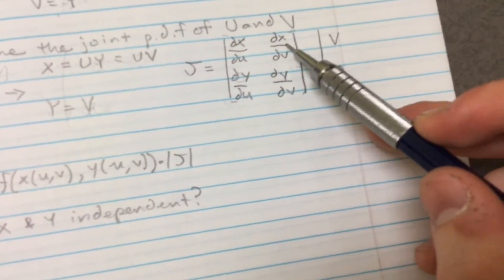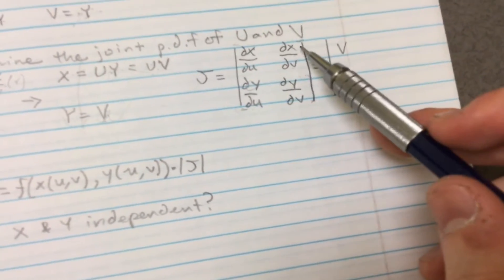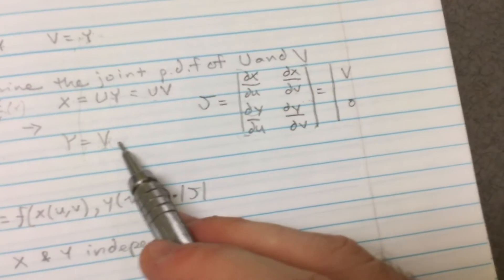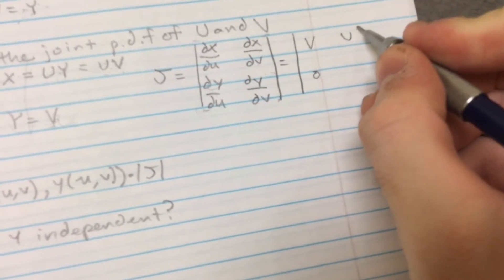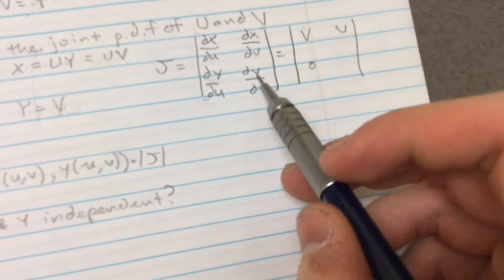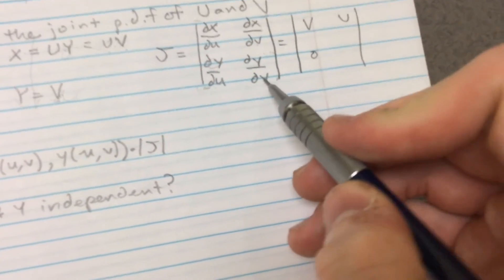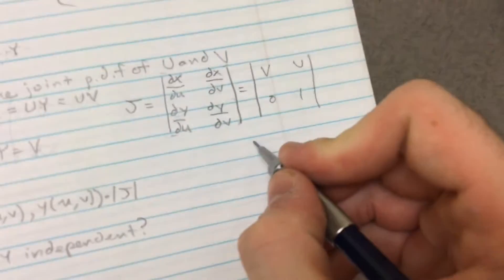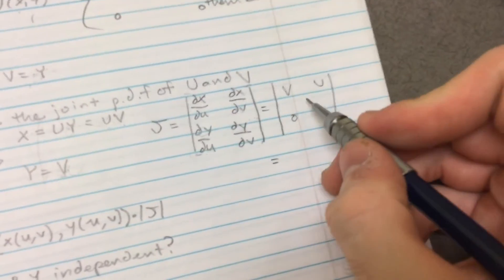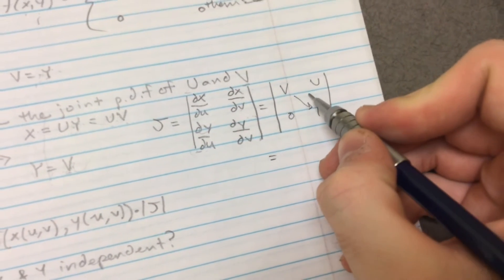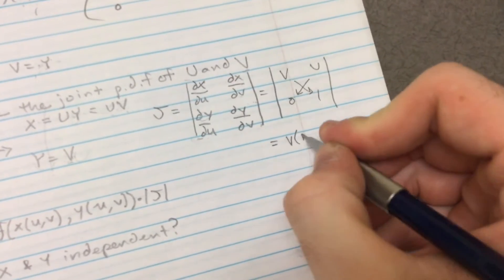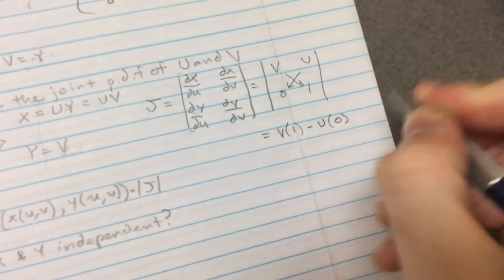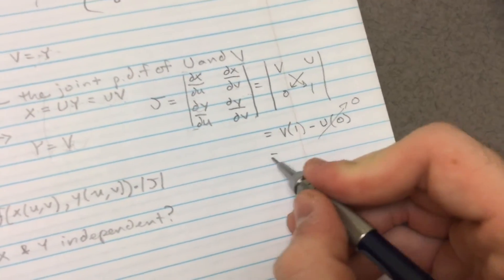Derivative of V with respect to X. We're gonna come down here. We're gonna find out that that's just U. And then the last one, derivative of V with respect to Y. That's just gonna be 1. So now the determinant is that multiplied by that minus that multiplied by that. So V times 1 minus U times 0. Well that's equal to 0. That's equal to V.